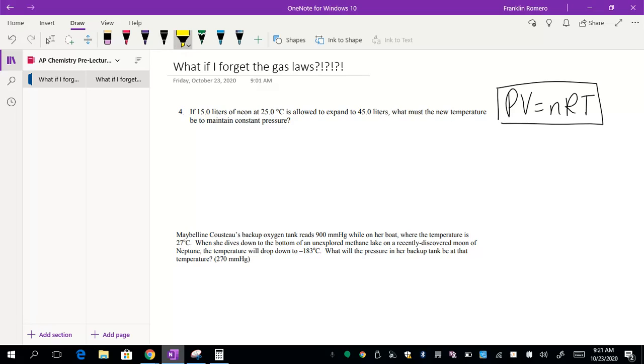Suppose we have a problem like the following. It says I have 15 liters of neon at 25 degrees Celsius, and I allow that to expand to 45 liters. What must be the new temperature? Notice that we're working under conditions of constant pressure. Basically what we have going on here is the volume is changing, the temperature is changing, but we're working under conditions of constant pressure.